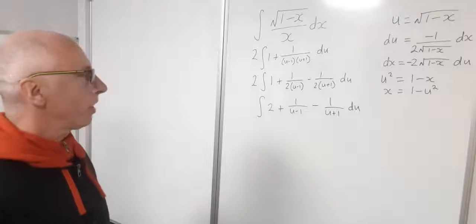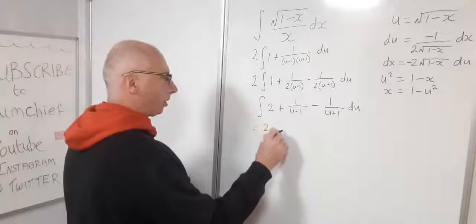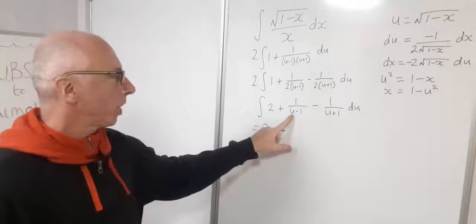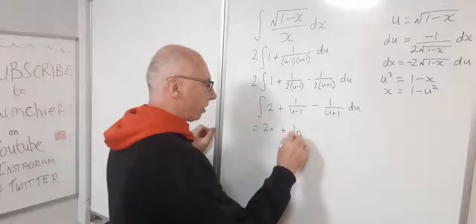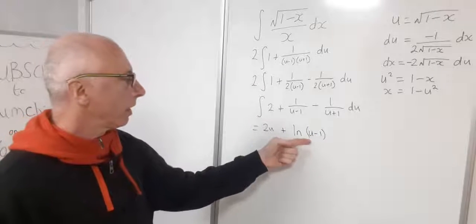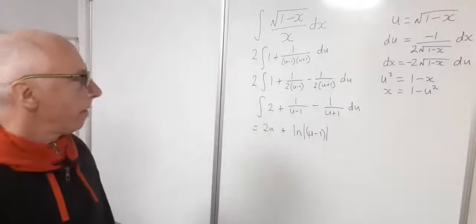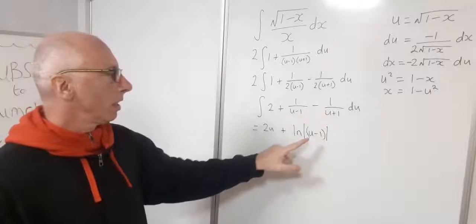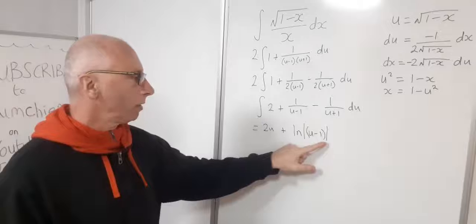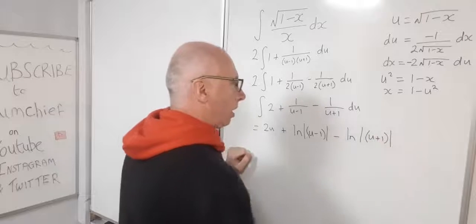Integrating: 2 integrates to 2u; 1 over (u minus 1) integrates to natural log of absolute value of (u minus 1); and subtracting, 1 over (u plus 1) integrates to natural log of absolute value of (u plus 1). The result is 2u plus ln|u minus 1| minus ln|u plus 1|.